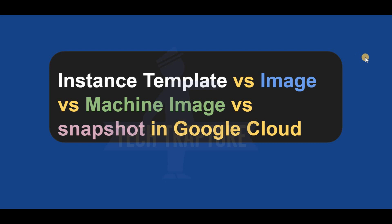Welcome back. In today's video we are going to discuss a very important topic: the difference between instance template, image, machine image, and snapshot in Google Cloud. When I started learning Google Cloud for the first time, this was the most confusing area for me. I want to make it simpler for you, so I'm creating this video and I'll show you a live demo of how these four can be created and used.